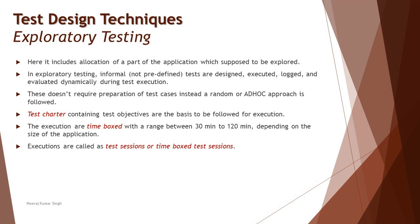Even though people think exploratory testing is completely documentless, we generally have a high-level document called a test charter. The test charter is a log sheet that captures event details — for example, what use case are we exploring, who is the person performing it, the start date, start time, end time, total duration, which module, and observations. This captures high-level information about each session so it can be used as documentation to justify what exactly was done. Just like error guessing, if there are any failures, you write the formal test case, log the defect, and track it.